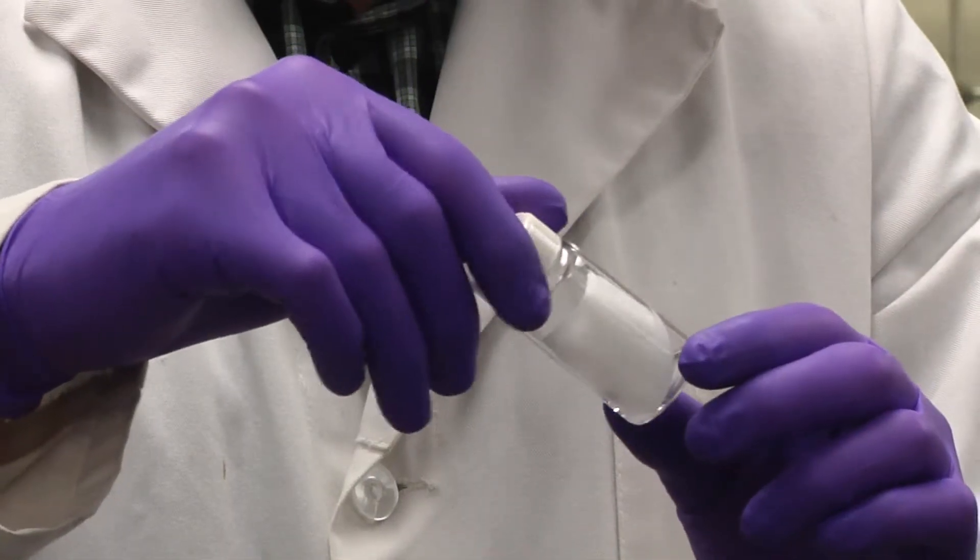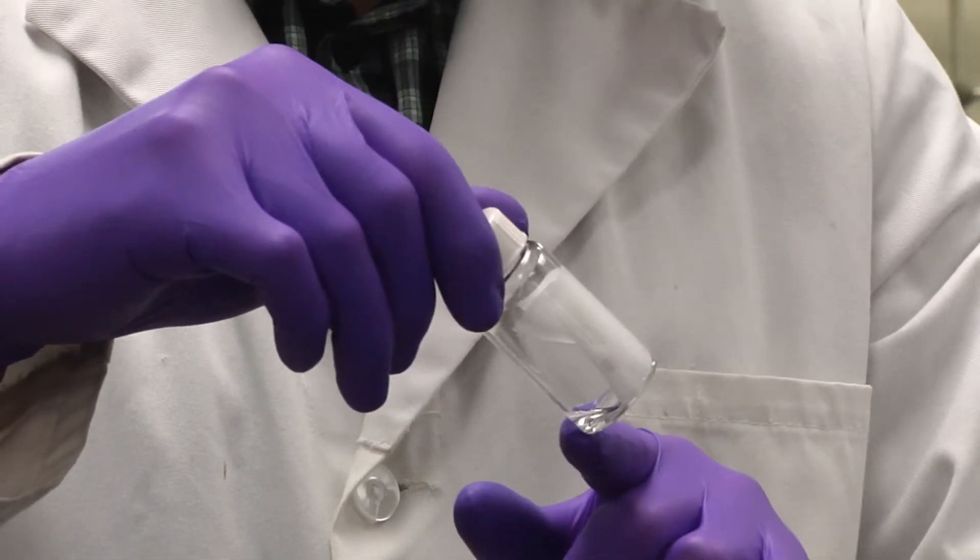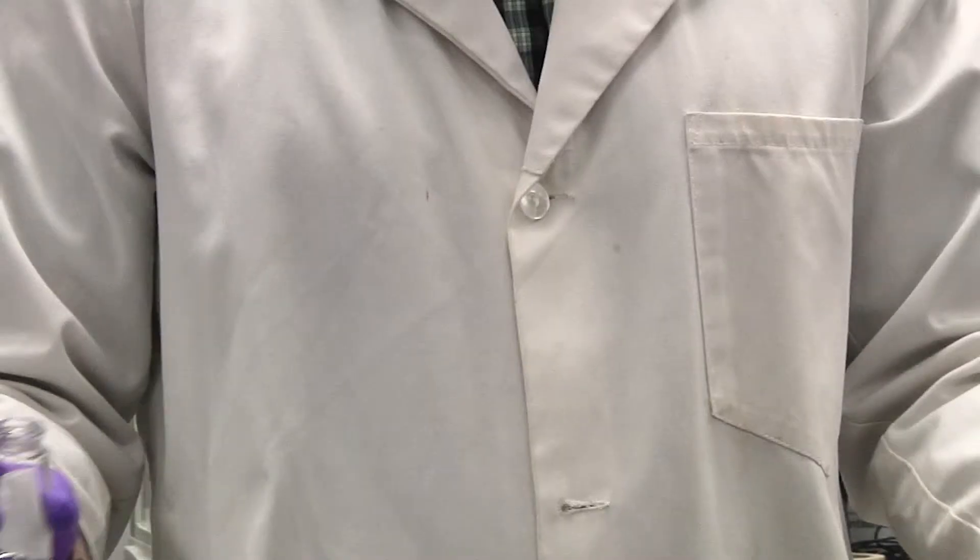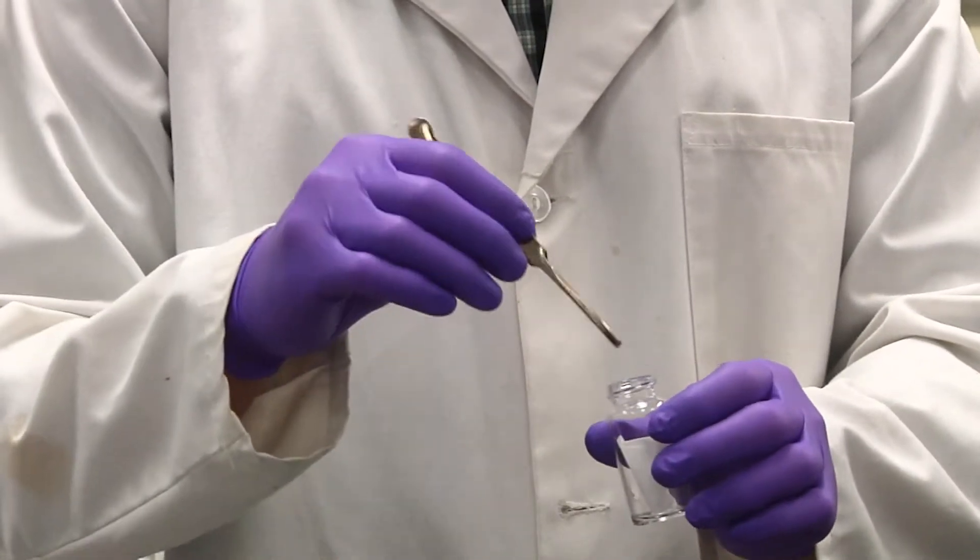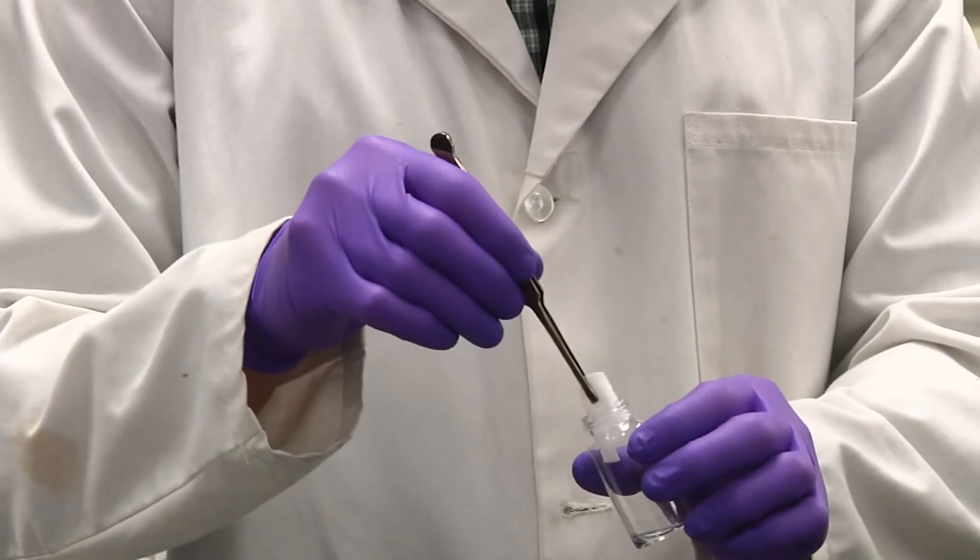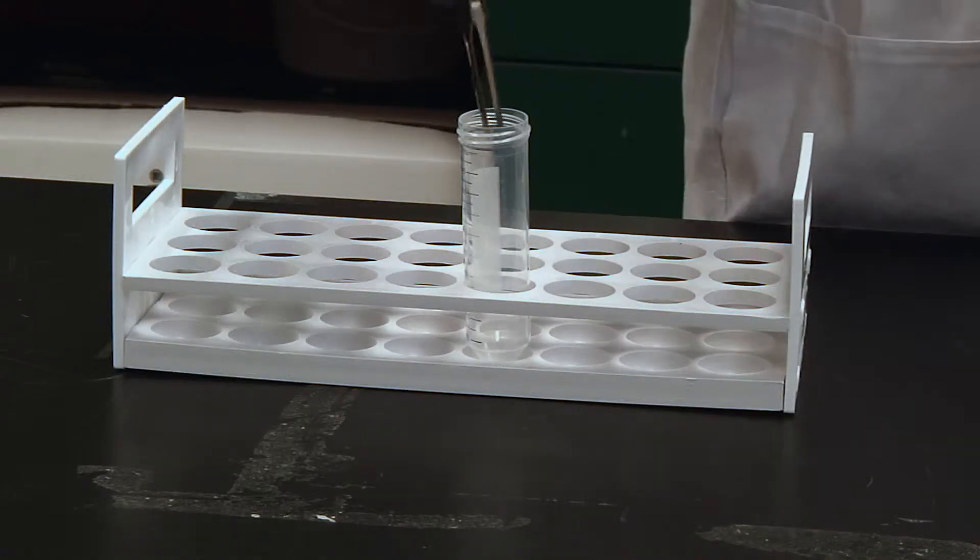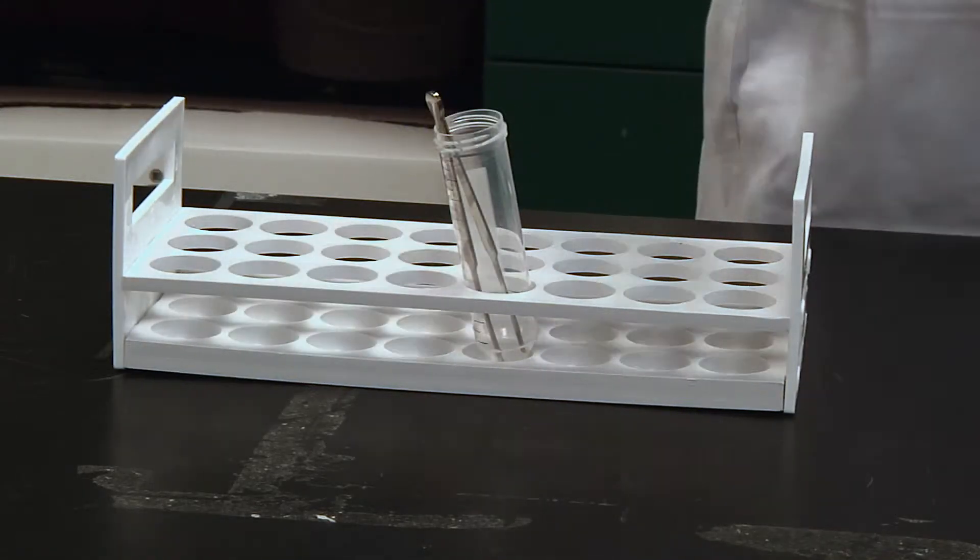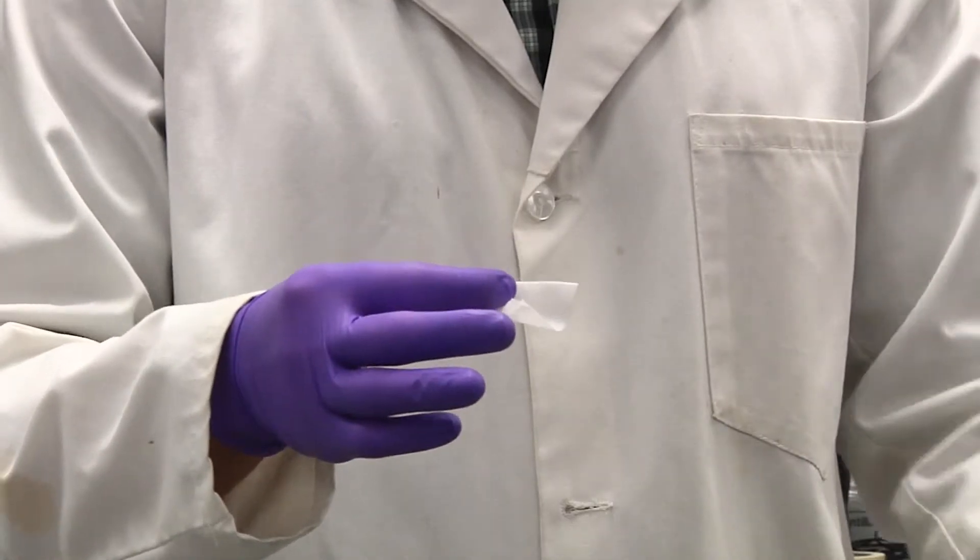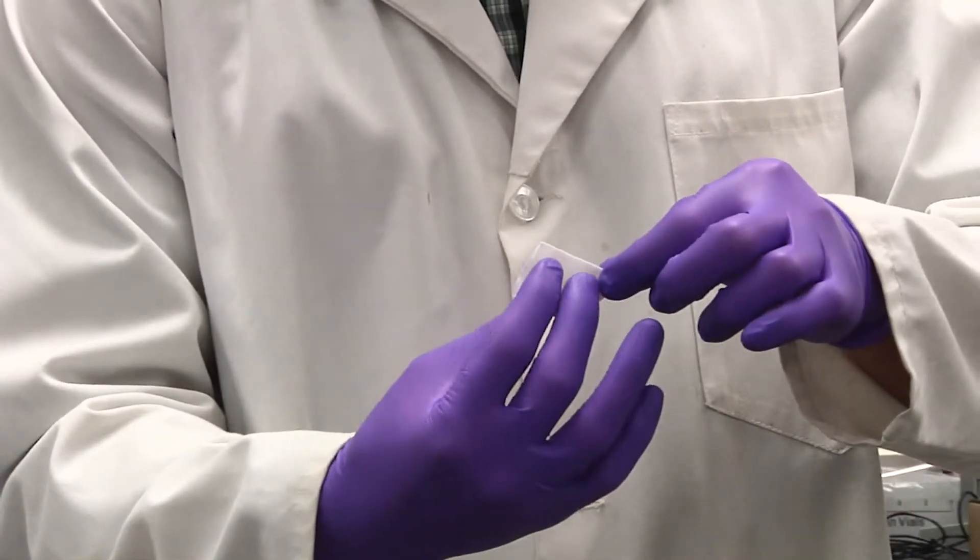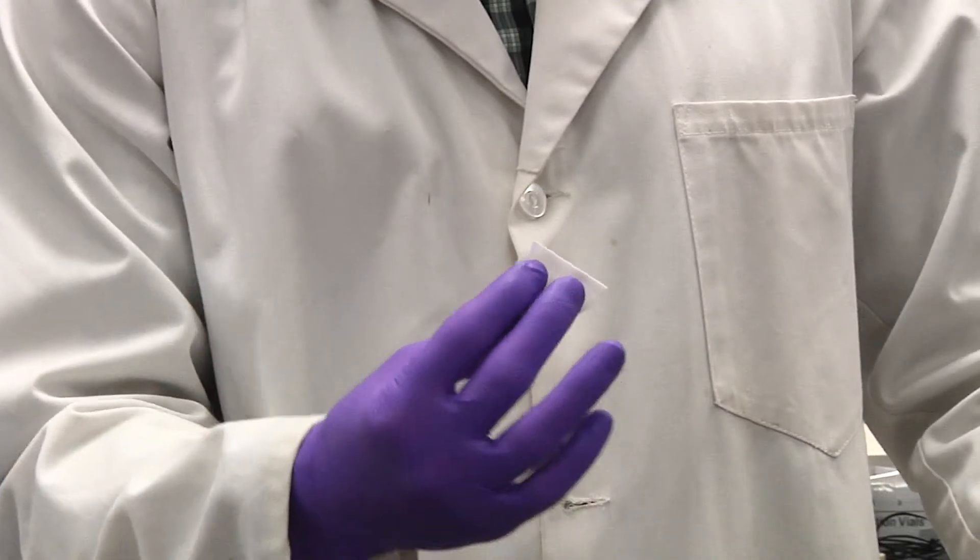Make sure the wipe is still moistened. There should be a small amount of solvent visible in the vial. Using clean tweezers, partially remove the wipe from the vial. Place the tweezers in the clean holder. Carefully remove the wipe and set down the vial. Grasp the wipe between your thumb and your index and middle fingers.